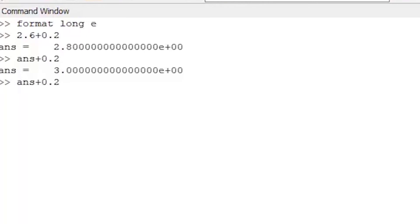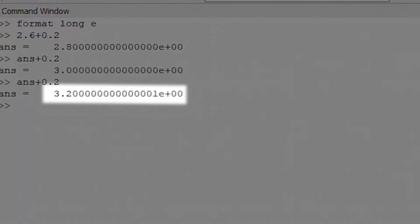But now, if I add 0.2 to ANS again, I get 3.2, a bunch of 0s, and a 1. Octave has accumulated enough error to become noticeable in just 3 additions.